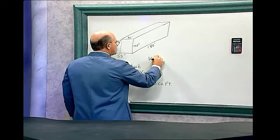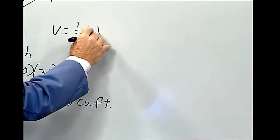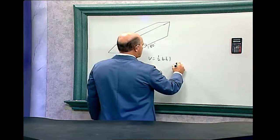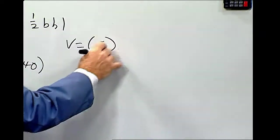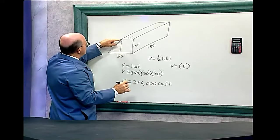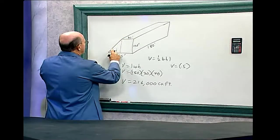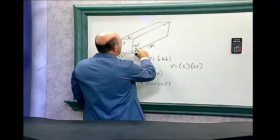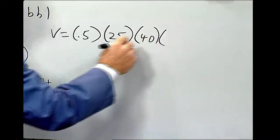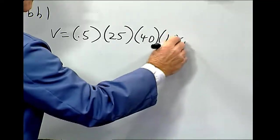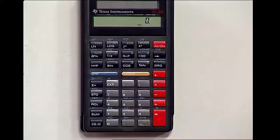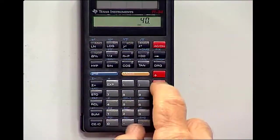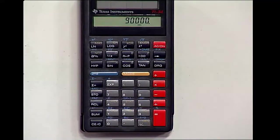Now the volume of the triangle shape is: volume equals one-half times the base, times the height, times the length of the triangle. Plugging in the numbers: volume equals 0.5 times the base — we take 30 feet away from 55, which equals 25 feet — times the height of 40, times the length of 180. That gives us 0.5 times 25 times 40 times 180 equals 90,000 cubic feet.